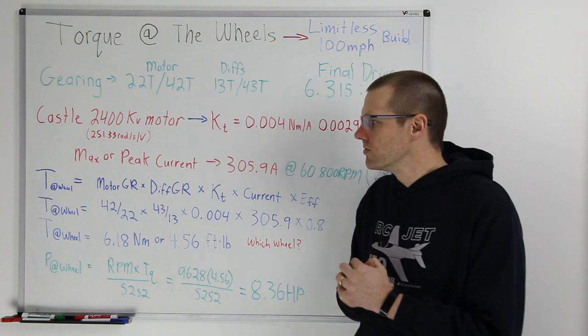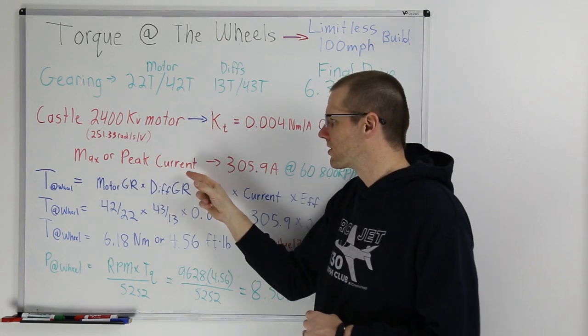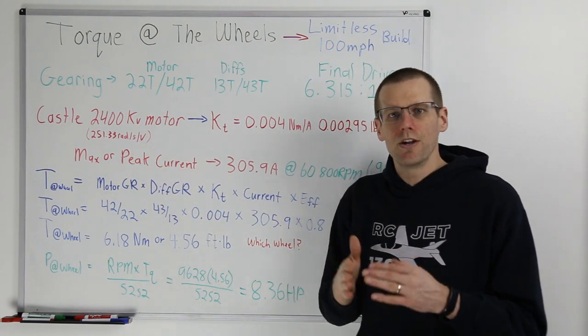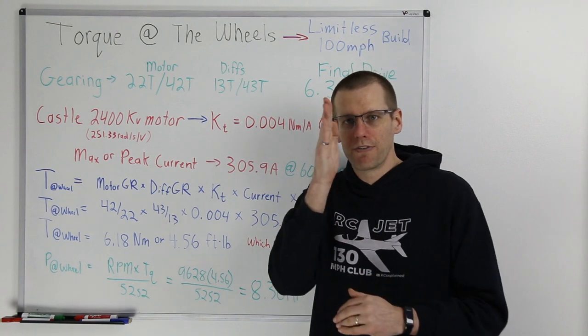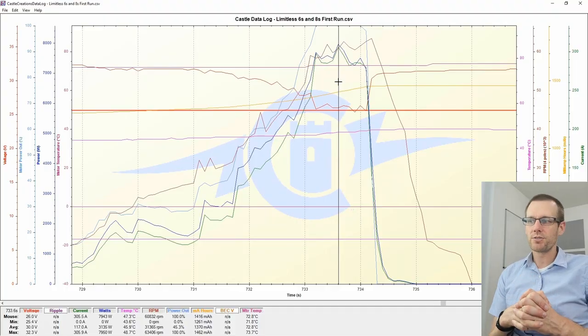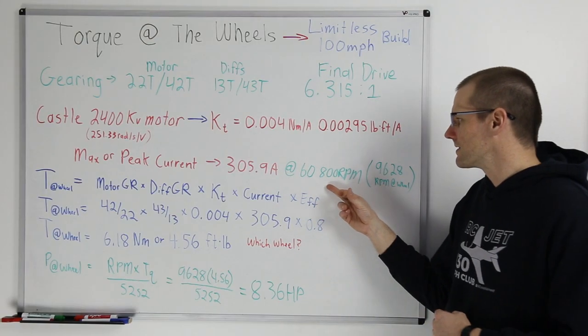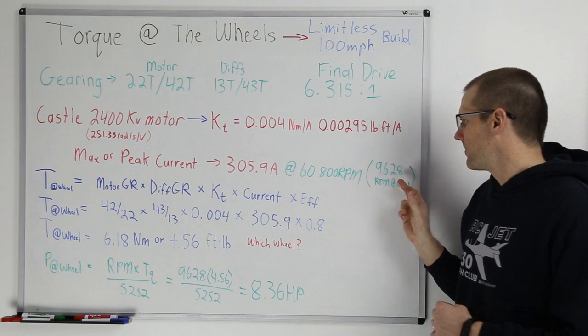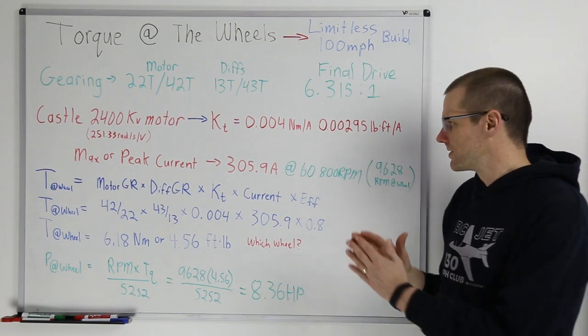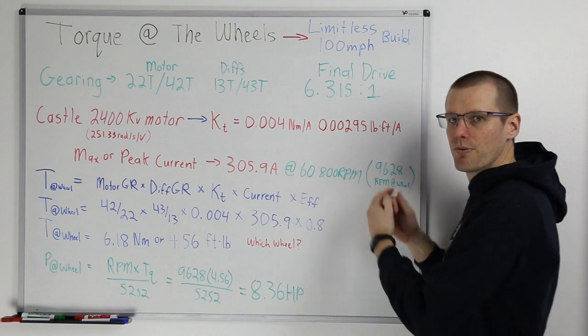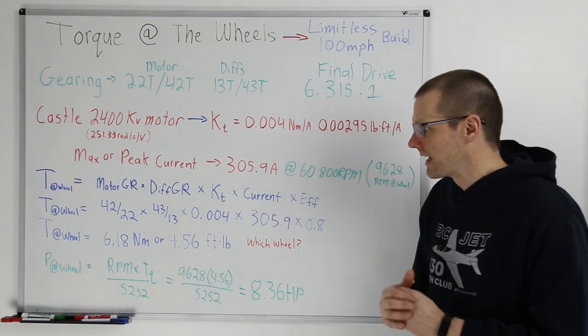Now the last bit of information that we do need is that max or peak current. The max or peak current in our specific run, we selected a very specific point in that run, and that is where we saw 305.9 amps of current, and this was at 60,800 rpm or 9628 rpm at the wheels. This here, not super important for now, but we will come back to use this later.